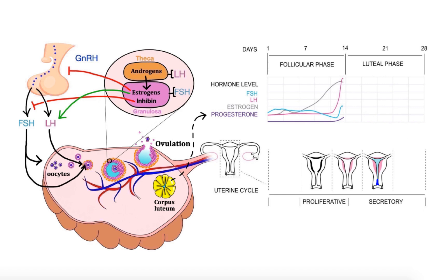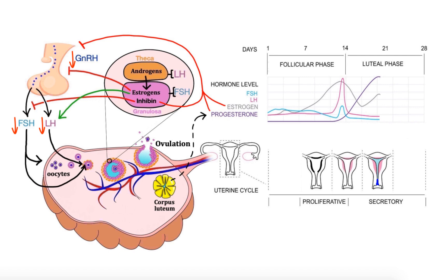Going back to our graph, during the first few days following ovulation, the corpus luteum secretes high levels of progesterone as well as lower levels of estrogen. This is why the graph shows a steep rise in progesterone and a slight bump in estrogen levels, which peak around day 21. During that same period, elevated levels of circulating estrogen, progesterone and inhibin also exert a negative feedback effect on the hypothalamus and anterior pituitary, thereby inhibiting secretion of GnRH, FSH and LH, which prevents new follicles from developing.